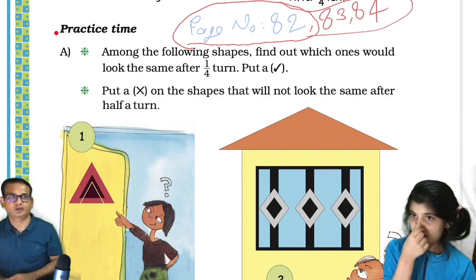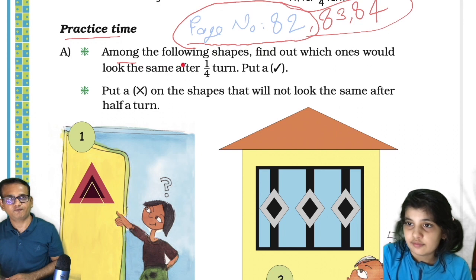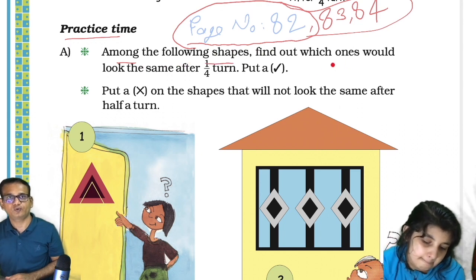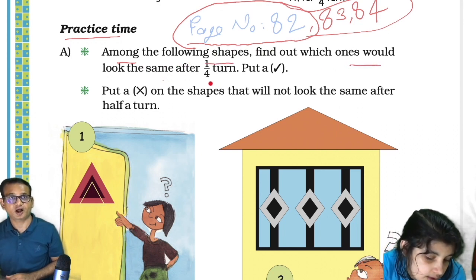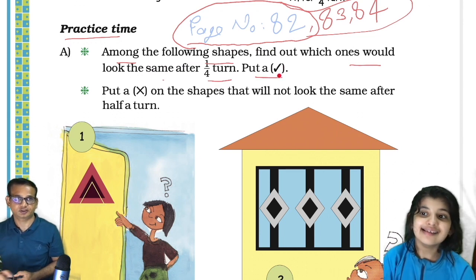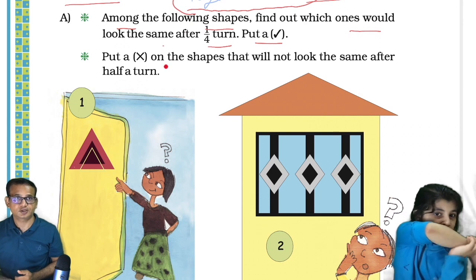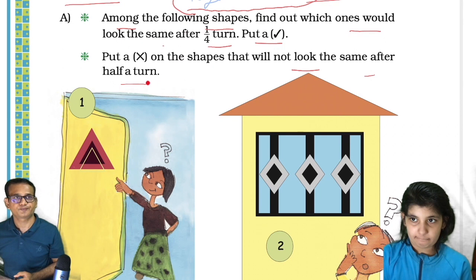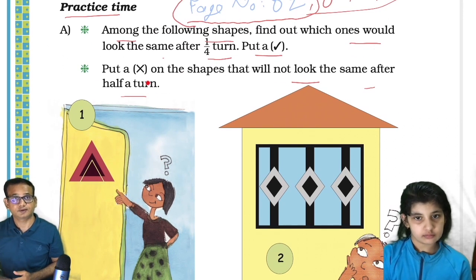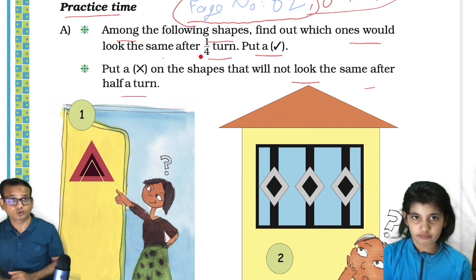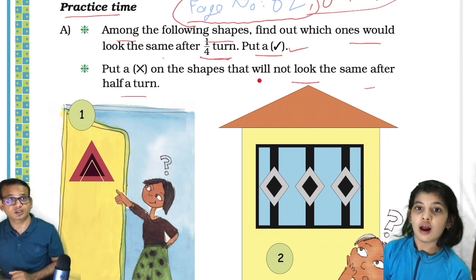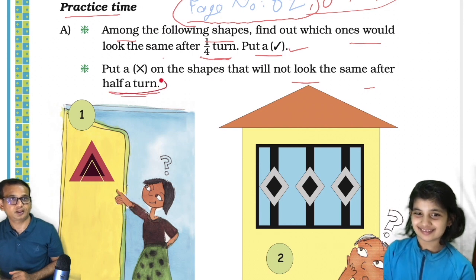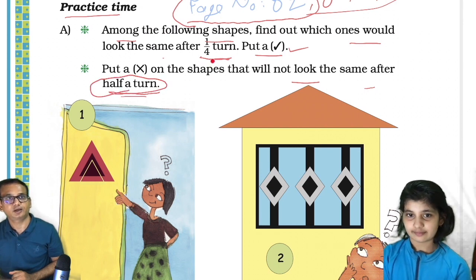Now, practice time. Among the following shapes, find out which ones would look the same after a quarter turn — put a tick. And put a cross on the shapes that will not look the same after half a turn. So here they are talking about half a turn, and here they are talking about quarter turn.